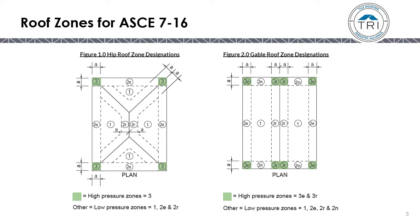In the manual, they have divided these zones into either a low-pressure zone or a high-pressure zone. In the hip roof Figure 1, the low-pressure zones are everything on that roof other than Zone 3. The high-pressure zone is Zone 3, just the corners. On a gable roof, the high-pressure zones are 3E and 3R, and the low-pressure zones are 1, 2E, 2R, and 2N.